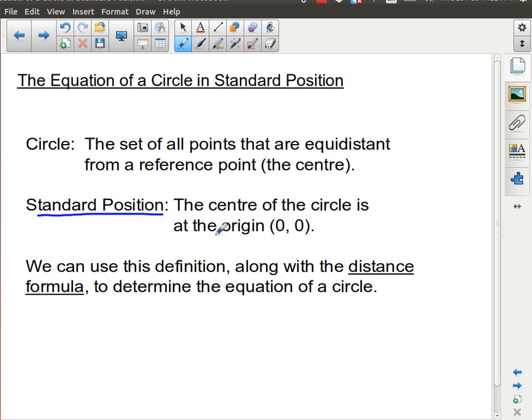So once again, definition, a circle is a set of all points that are equidistant from a reference point. That's the center of the circle. And we specifically are going to be looking at circles in standard position, where the center of the circle is at the origin 0, 0. Using these two definitions, and then using what we learned with regards to the distance formula, the distance is equal to, actually that's a little too simple. We learned it as x2 minus x1, all squared, plus y2 minus y1, all squared, square rooted. So that's the distance formula.